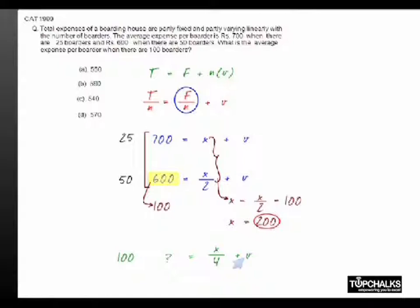Now we already know that x equals 200, so x by 4 will actually be 50, which implies the difference with the case where there were 25 people, the difference of rupees 150.